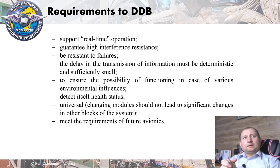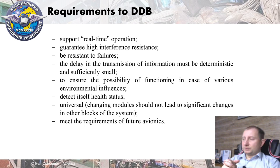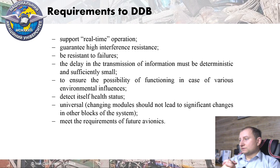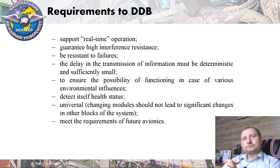The delay in the transmission of information must be deterministic and sufficiently small. The time of data transmission should be consistent with a particular frequency, because if the frequency of data transferring for a particular parameter fluctuates, that is not good for the system — a particular system may require data at a specific frequency. Fluctuations in this frequency can cause problems, and in most cases this is caused by interference influence on the data channel.